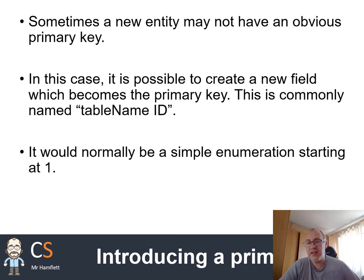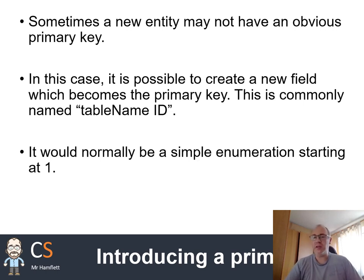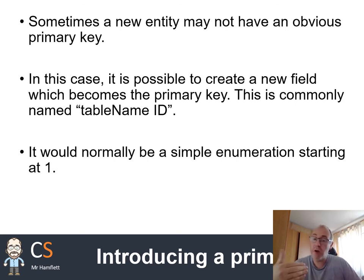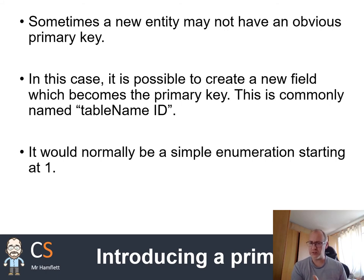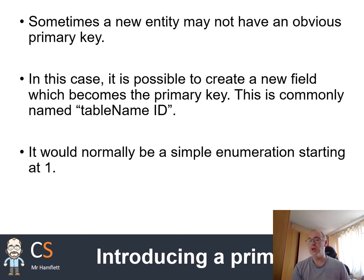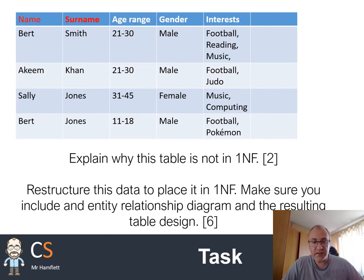Sometimes when creating a new table there is no obvious primary key, so we introduce one. Create a new ID — a numeric value that is unique for each record. It's very commonly called an ID, named with the table name followed by 'ID'. Those familiar with SQL databases will know the auto-number field, which automatically assigns a unique number to each record. That's essentially all an ID field is.